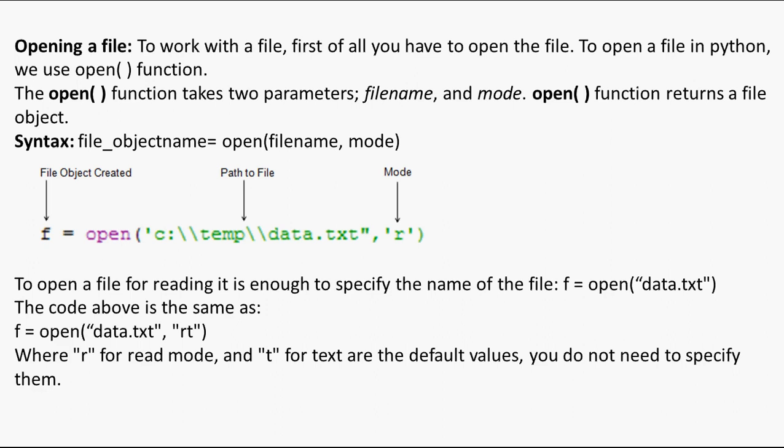In the second statement, 'rt' — 't' means text file, so 't' is optional. Even if you don't write 't', by default it is considered text mode, meaning we are dealing with a text file. For example: f = open('data.txt', 'rt') means the text file data.txt has been opened in reading mode. This is how a file is opened.